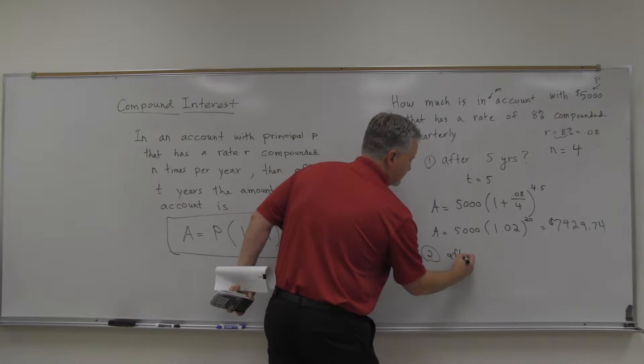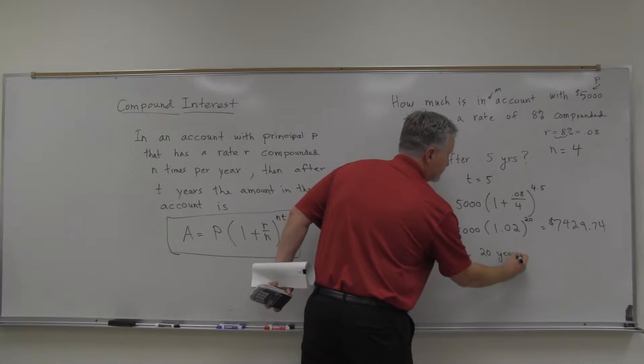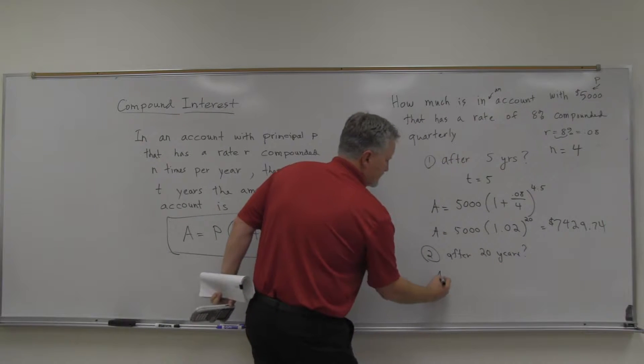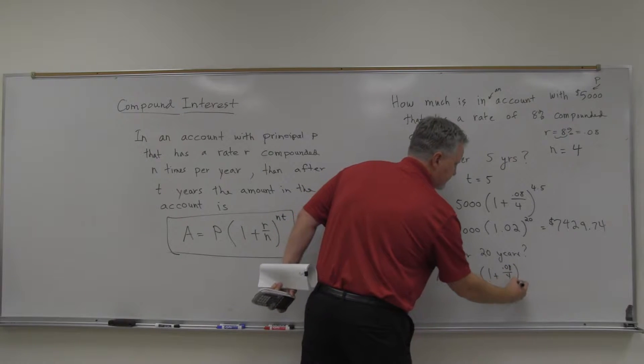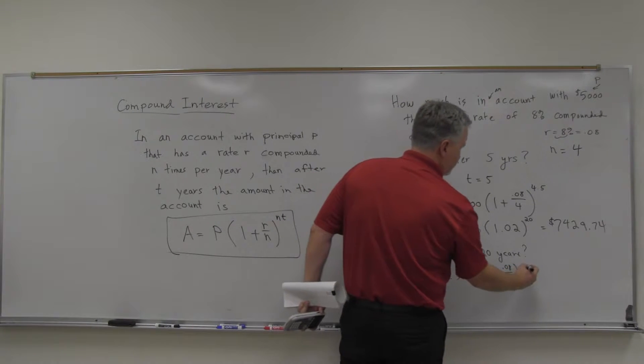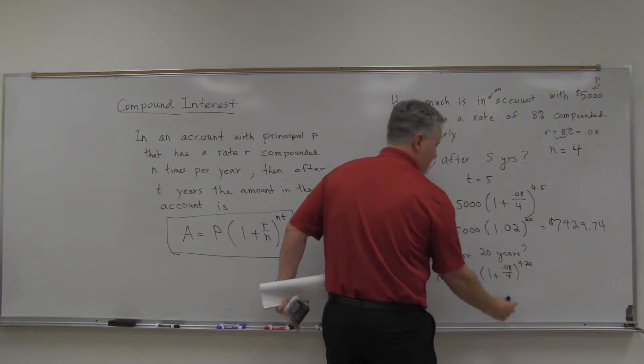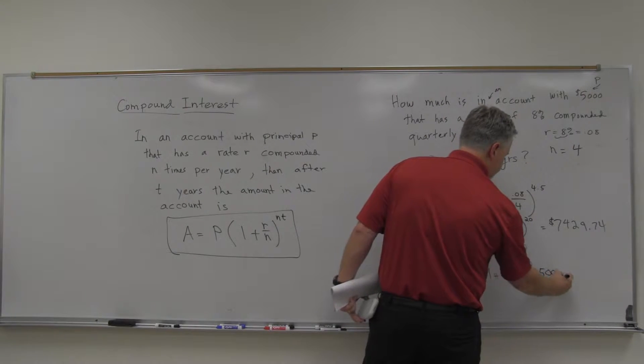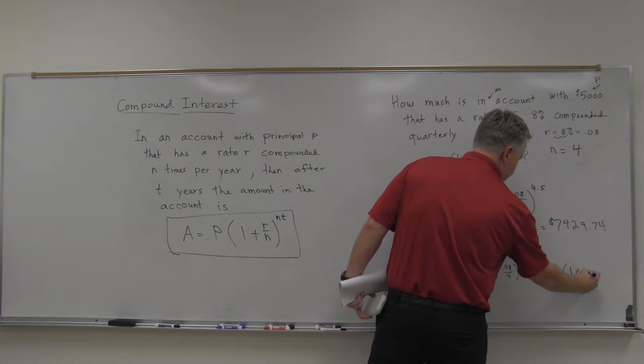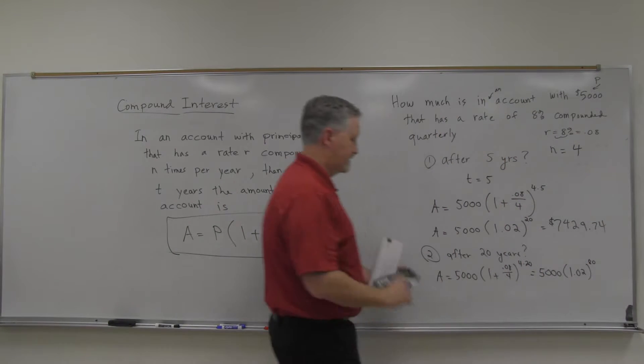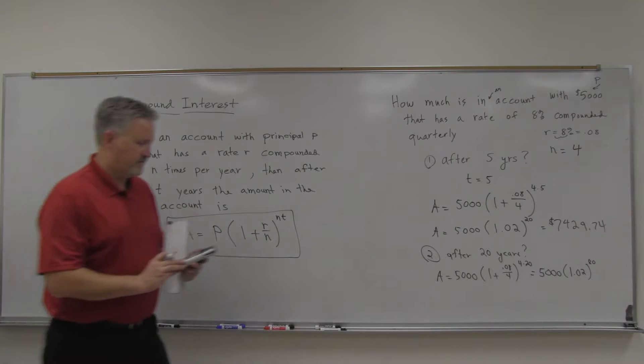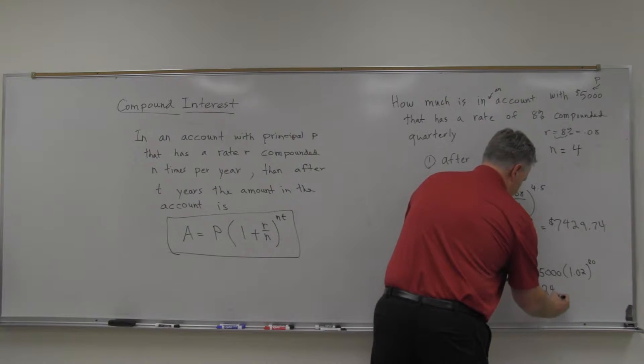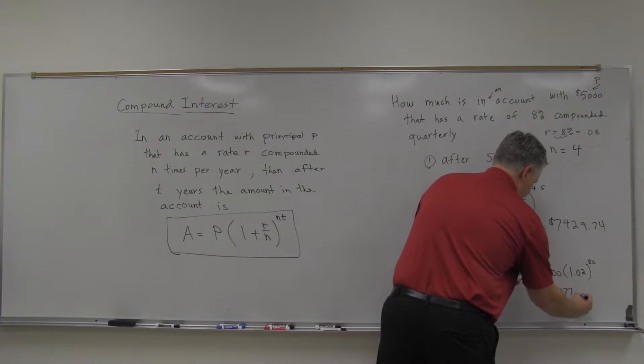So how much do we have after 20 years? That would be A equals 5,000 times 1 plus 0.08 divided by 4 again. And we're going to raise that to the 4 now times 20. So that 80th power, so that's 5,000, 1.02 to the 80th power, which gives us $24,377.20.